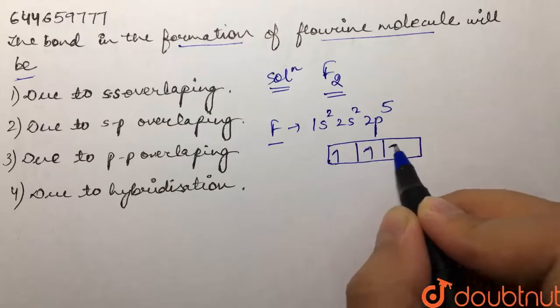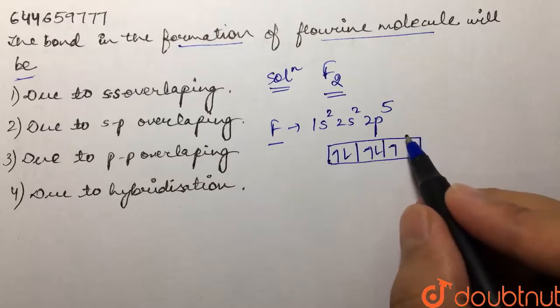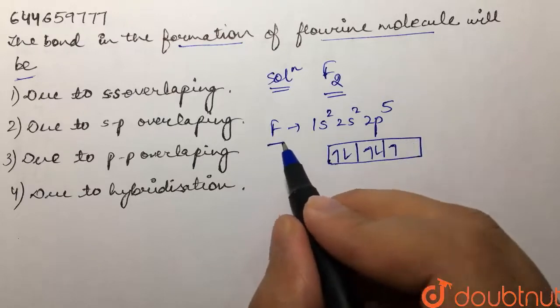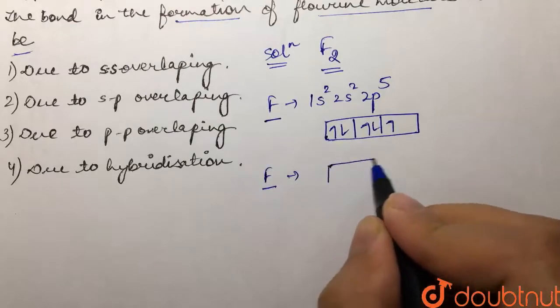So over here we can see that there is presence of one unpaired electron. So we have one fluorine atom. Then if you talk about the second fluorine atom, similarly that would also have presence of one unpaired electron like this.